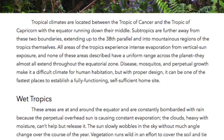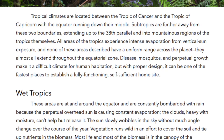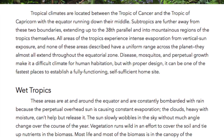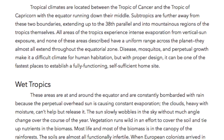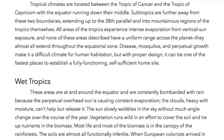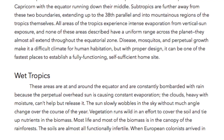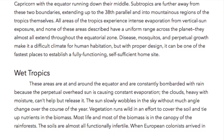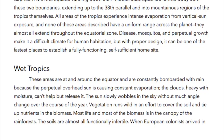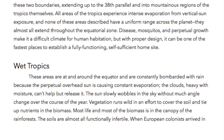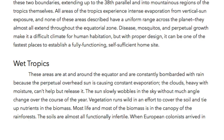Wet Tropics. These areas are at and around the equator and are constantly bombarded with rain because the perpetual overhead sun causes constant evaporation. The clouds, heavy with moisture, can't help but release it. The sun slowly wobbles in the sky without much angle change over the course of the year. Vegetation runs wild in an effort to cover the soil and tie up nutrients in the biomass. Most life, and most of the biomass, is in the canopy of the rainforests.